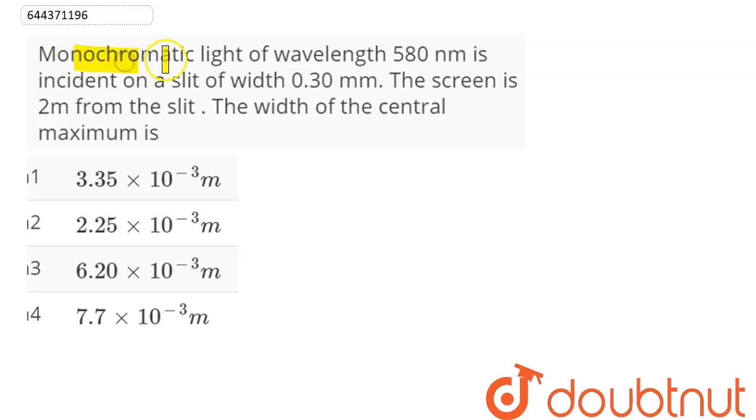Question is, monochromatic light of wavelength 580 nanometer is incident on a slit of width 0.3 mm. The screen is 2 meter from the slit. The width of the central maximum is.